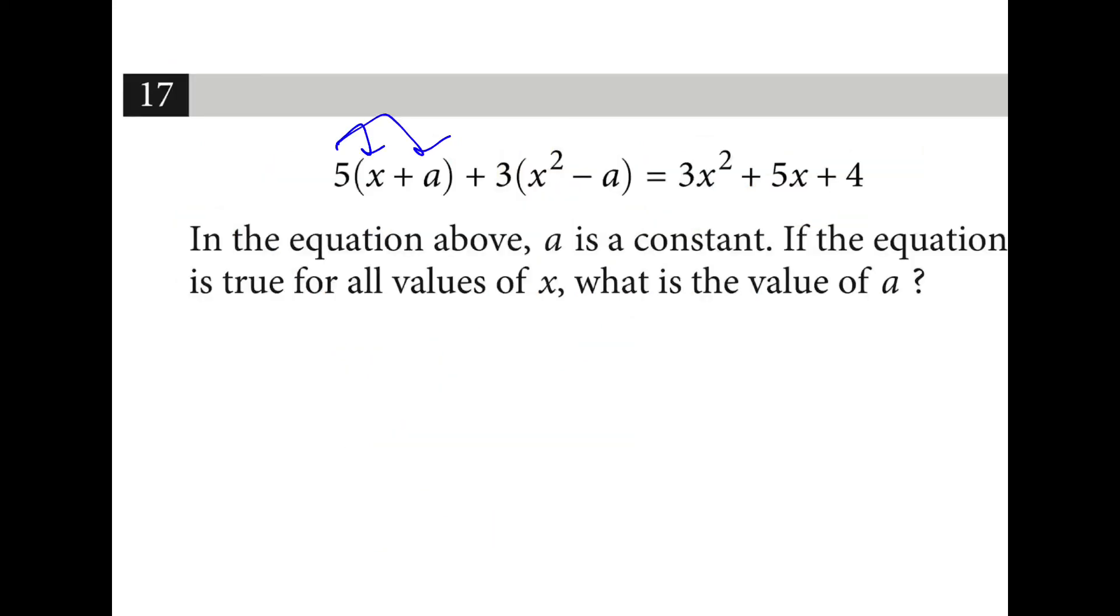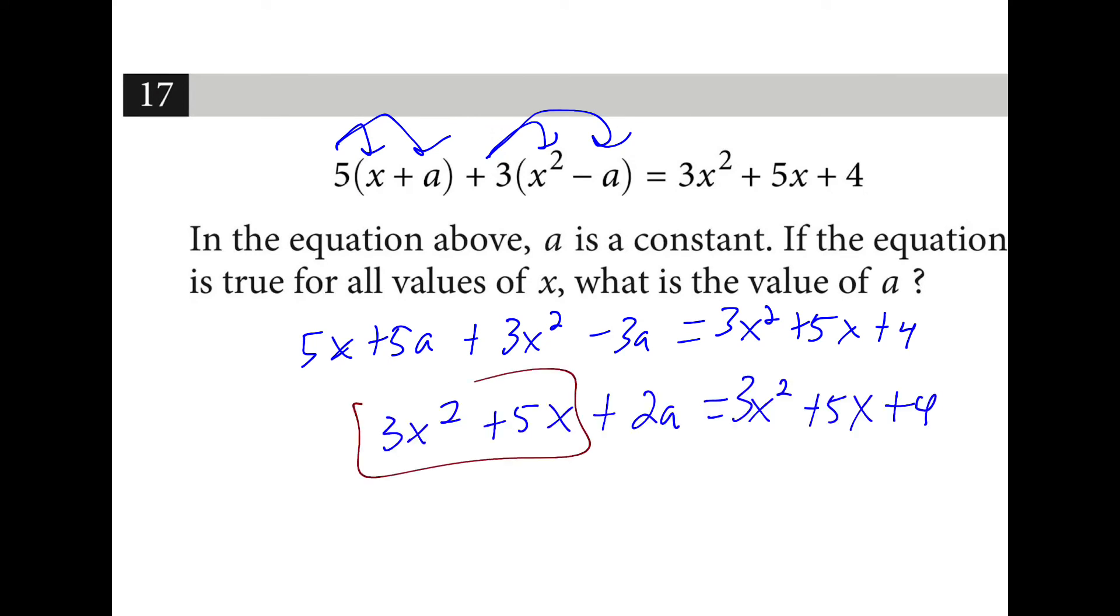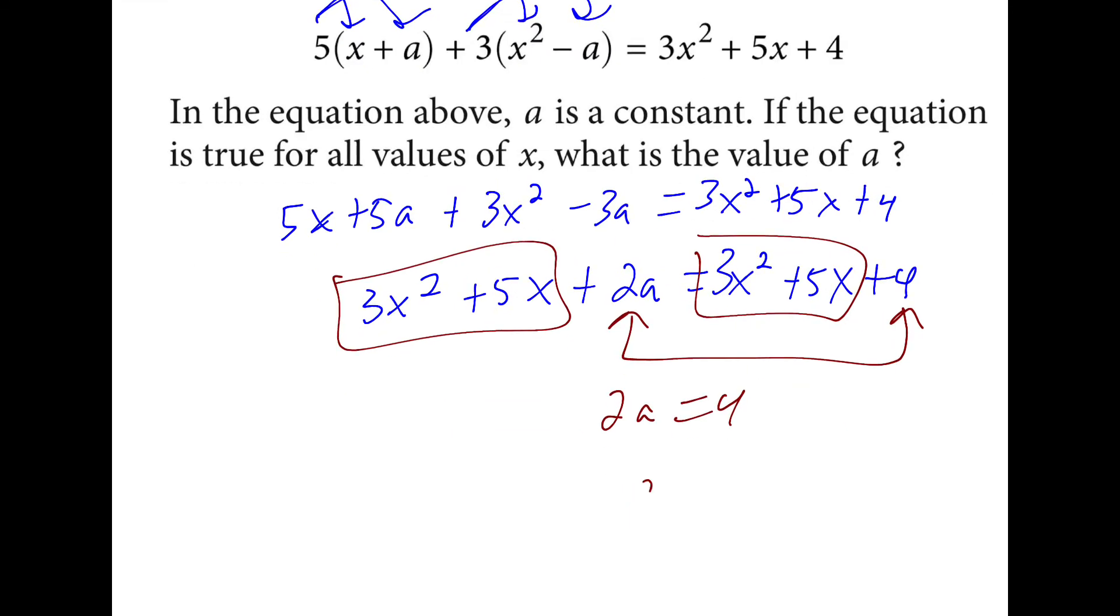First we distribute the five and the three. Then we combine like terms. And I notice that the three x squared plus five x parts match. The only thing left is two a and four. So two a is equal to four. If you divide, a is equal to two.